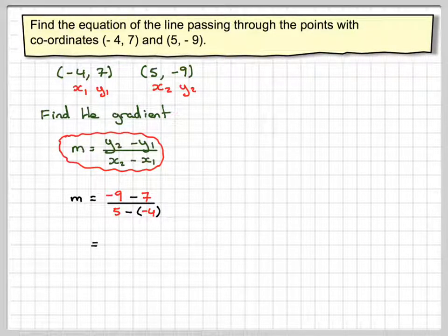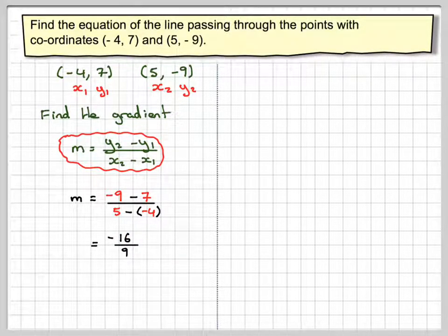-9 minus 7 gives me -16. And then 5 minus -4 is like 5 plus 4 which is 9. So that's the gradient.